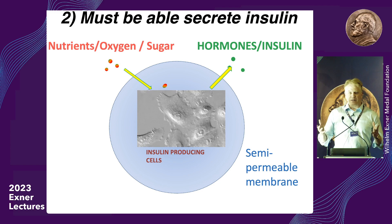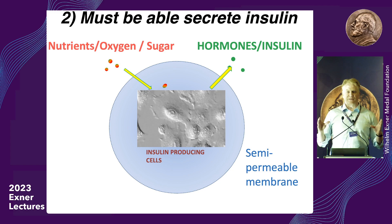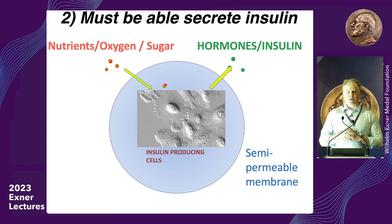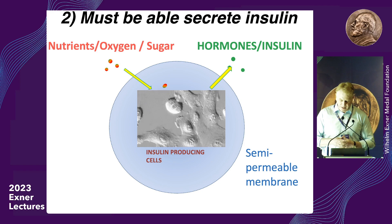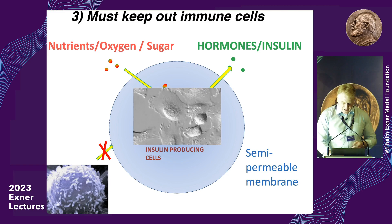We need to keep these cells oxygenated, allow the drug to come out in response, and importantly, block elements of the immune system from killing them. Because we want one device that works in everybody, we need to protect it from immune rejection. As engineers, we think about creating a semi-permeable barrier that can allow what we want to come in, but keep immune elements away.